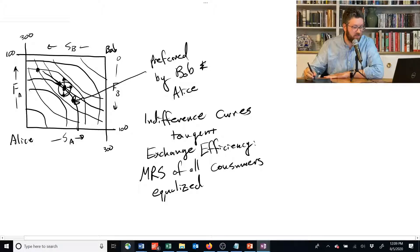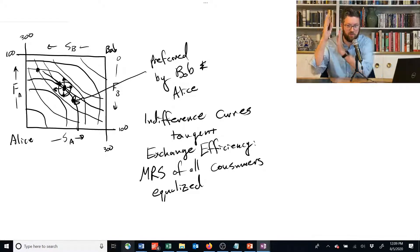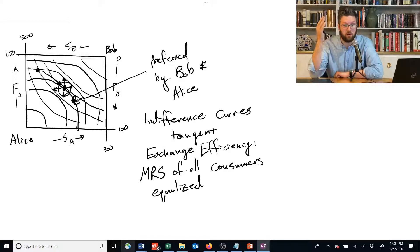And if we give some of Alice's shelter to Bob, he's worse off. So exchange efficiency is when those two things are just tangent, and that will occur when their slopes are exactly the same. Their slope is called the marginal rate of substitution.